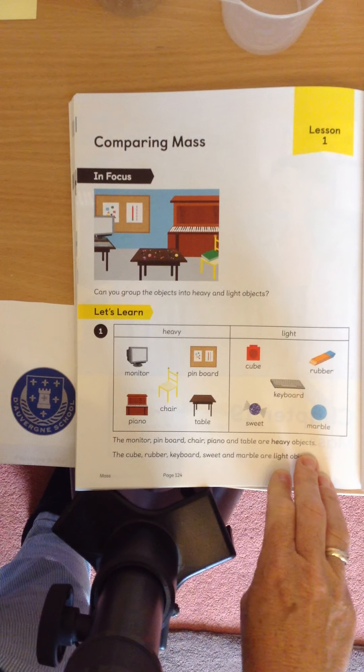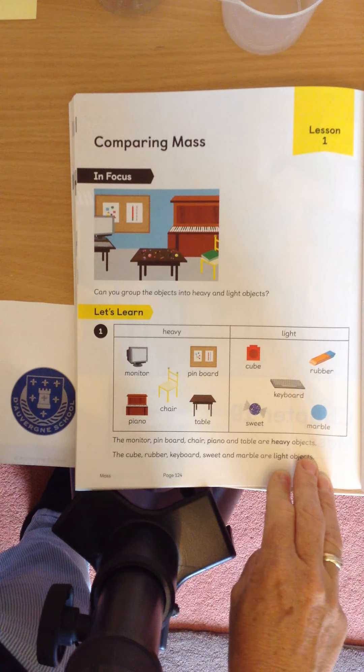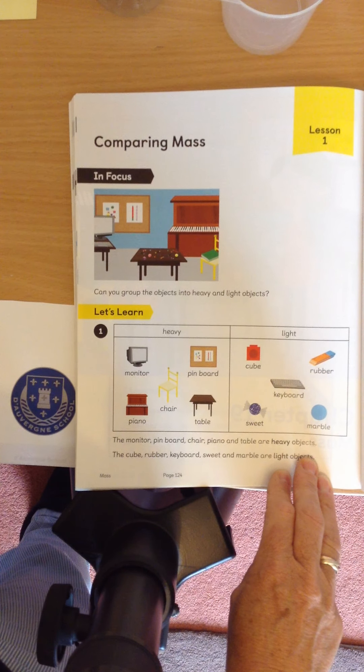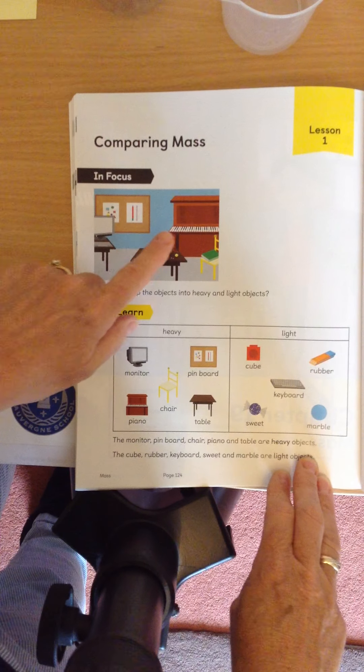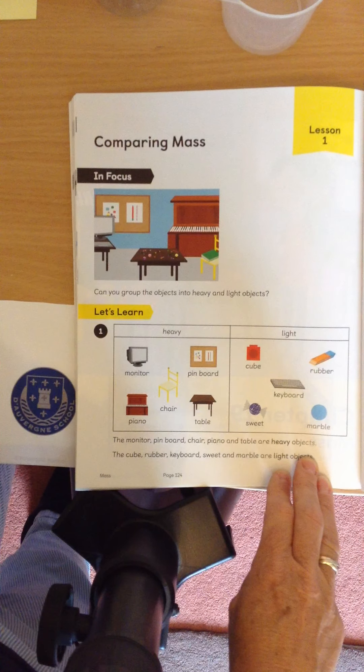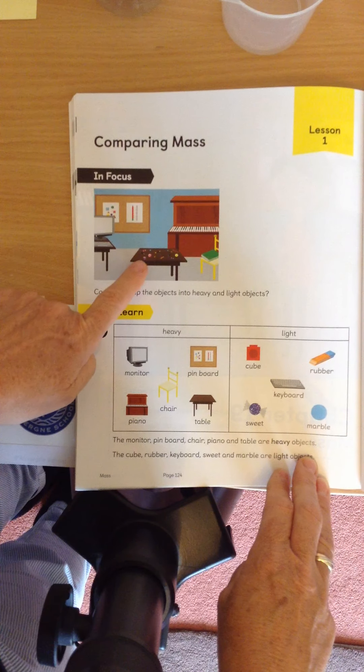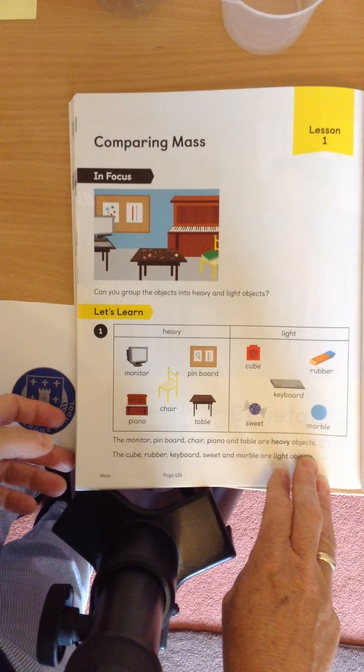So, if you look at all those objects, which is heavy? Which would be hard to lift? If you think about, probably the heaviest would be the piano, that's right. It's very heavy. That would be heavy. And these little objects would be light.